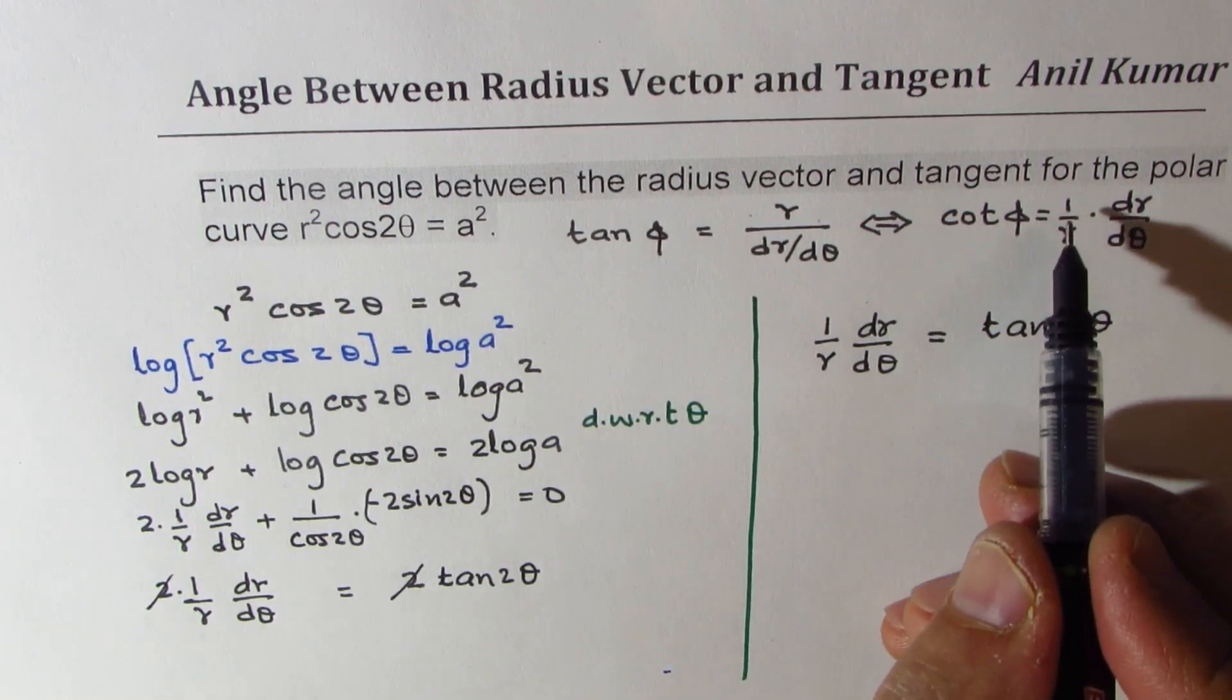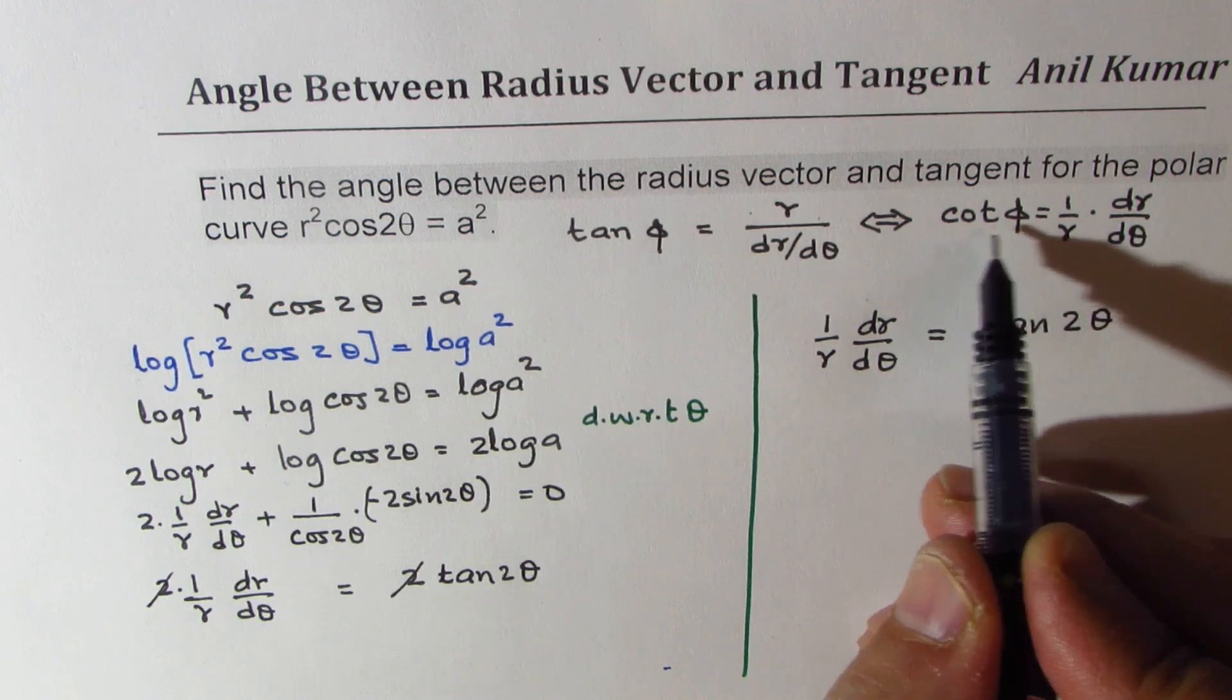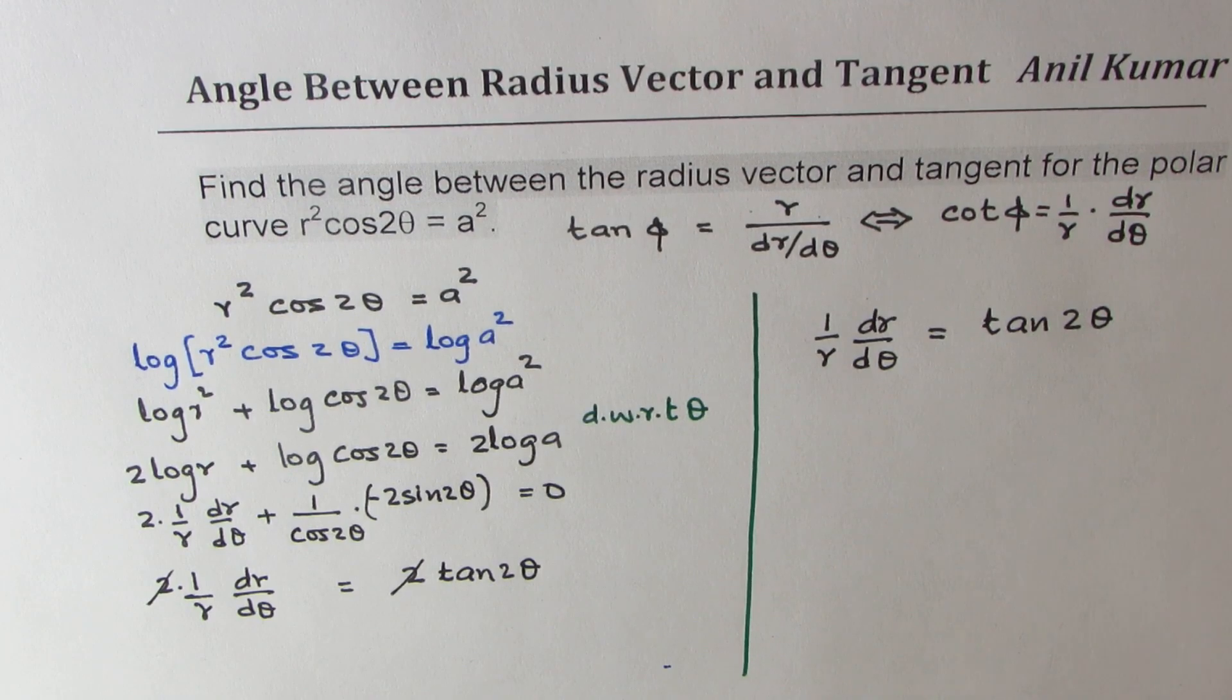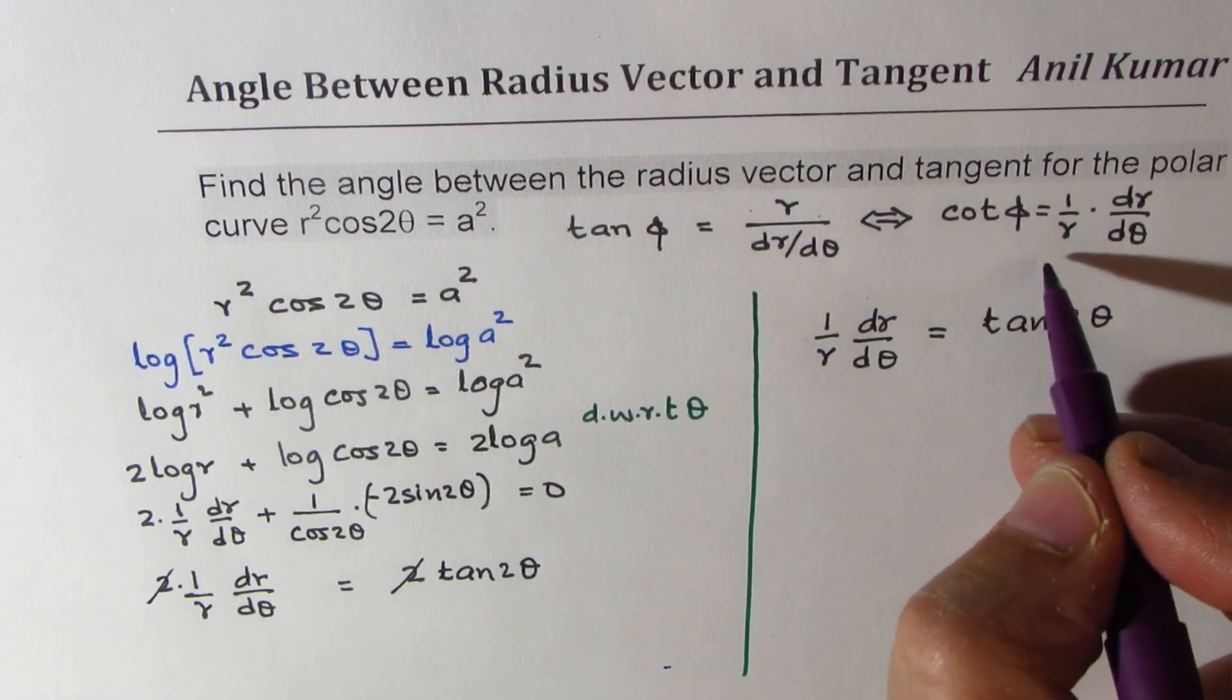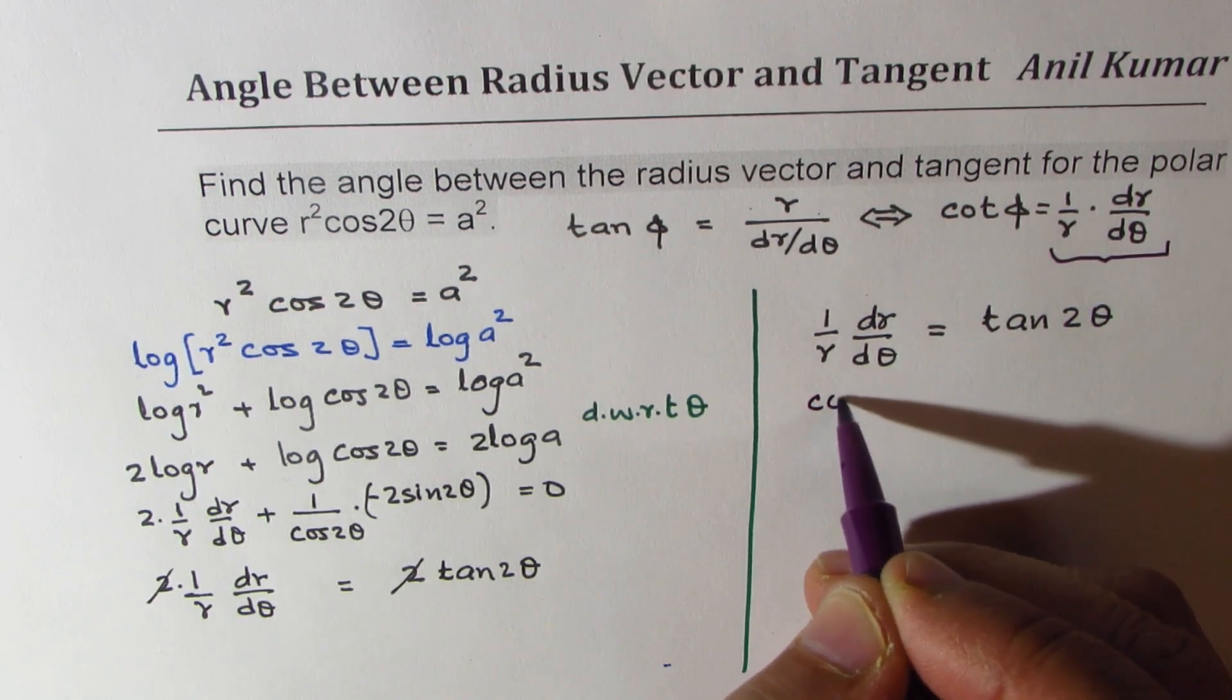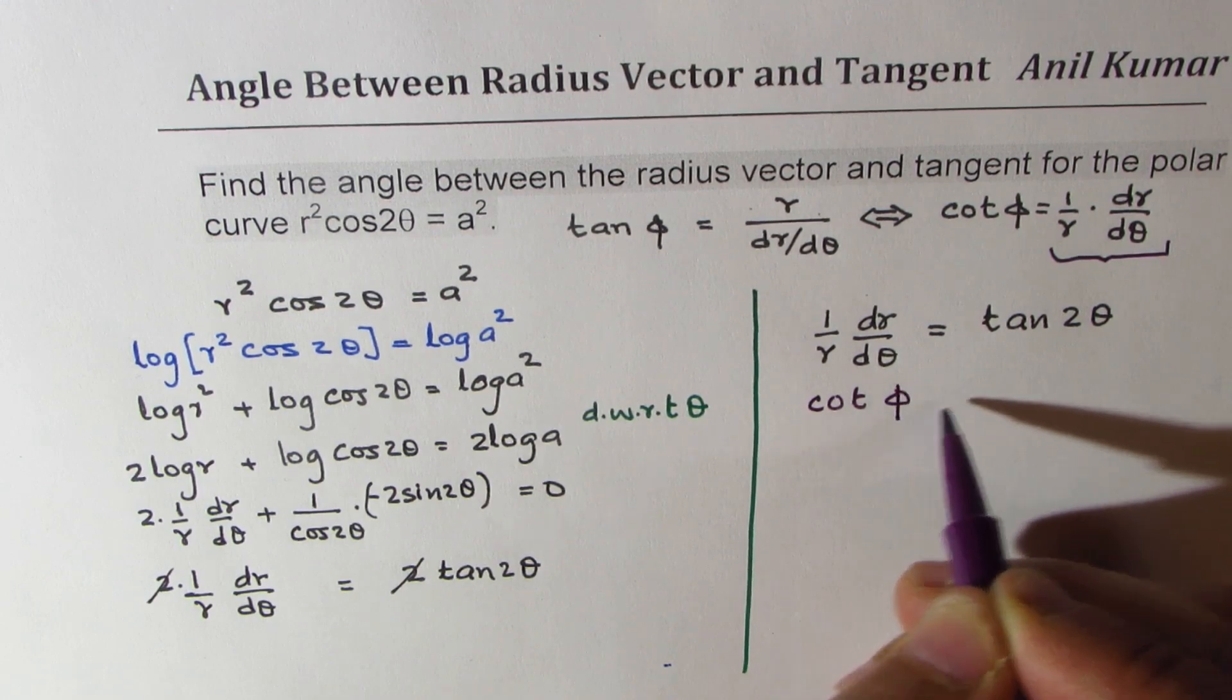Now as you can see 1/r dr/dθ is cot φ. Right. So the left side we could write as cot φ. Correct. So this is cot φ. So we can write this as cot φ.